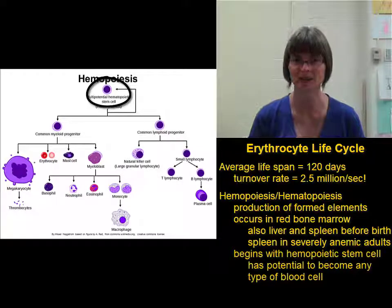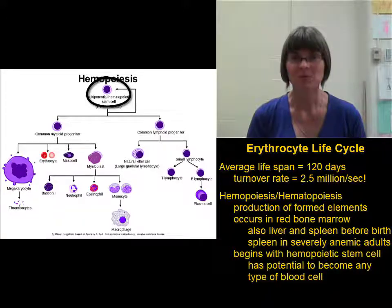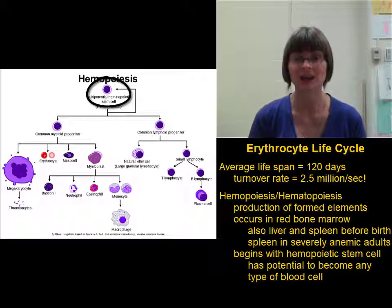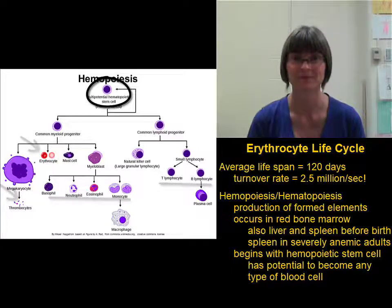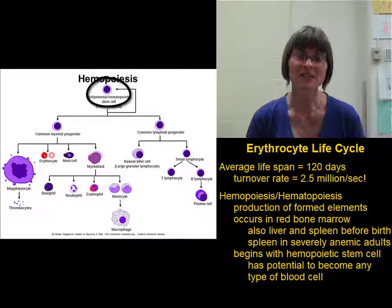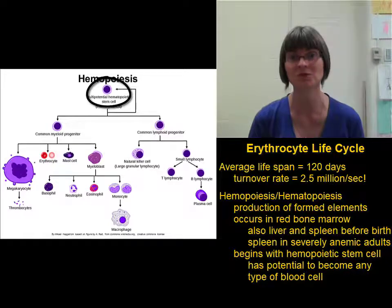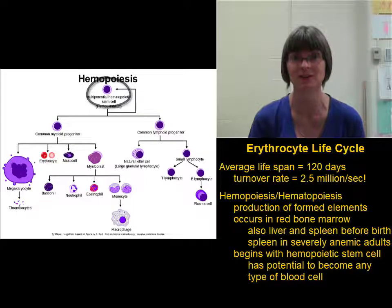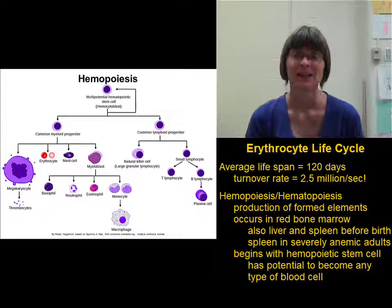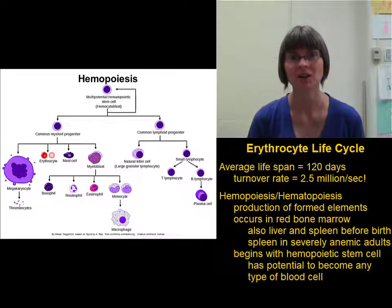The process of hemopoiesis begins with a hematopoietic stem cell. This hematopoietic stem cell has the ability to differentiate into any of the different types of cells we see in the blood — erythrocytes, platelets, or any of the different types of leukocytes. Because this one cell has the ability to produce many cell types, we call it multipotent, meaning it has the ability to give rise to many different cell types.